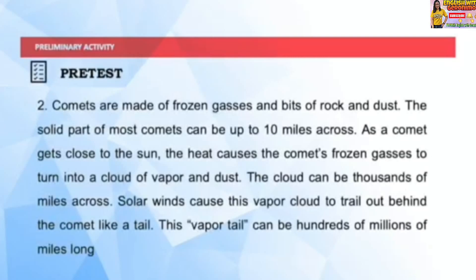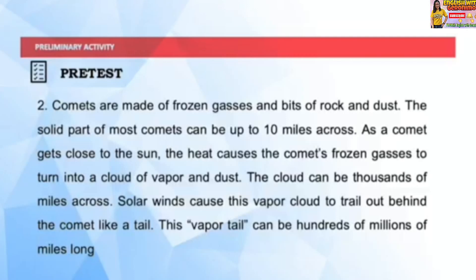Number 2: Comets are made of frozen gases and bits of rock and dust. The solid part of most comets can be up to 10 miles across. As a comet gets close to the sun, the heat causes the comet's frozen gases to turn into a cloud of vapor and dust. The cloud can be thousands of miles across. Solar winds cause this vapor cloud to trail out behind the comet like a tail. This vapor tail can be hundreds of millions of miles long. If you got: 'Comets are made of frozen gases and bits of rock and dust' as your answer, great job.